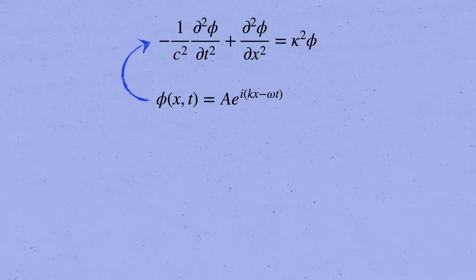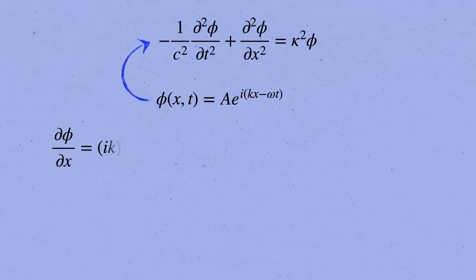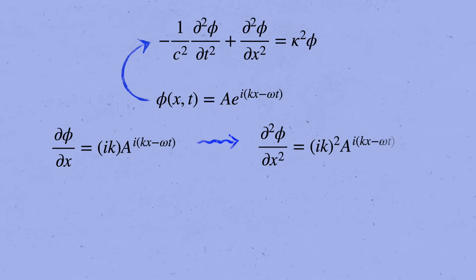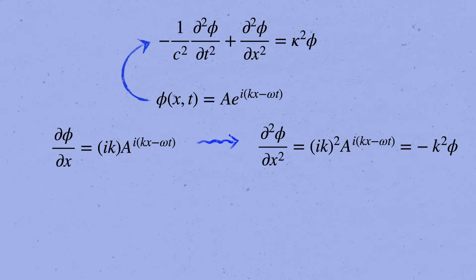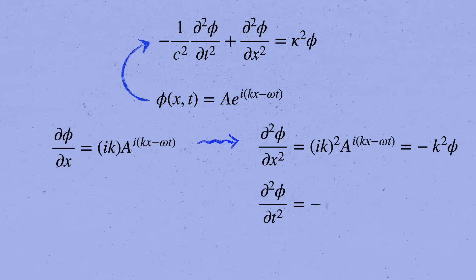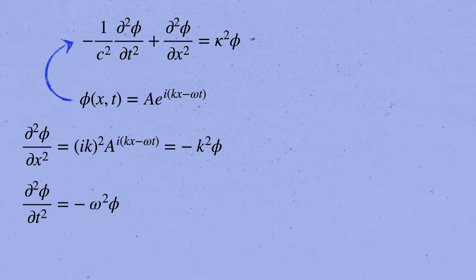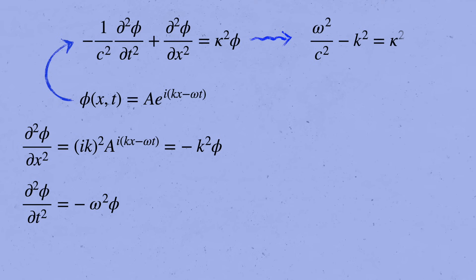Let's see what happens when we actually plug it into the Klein-Gordon equation. When we take the derivative with respect to x, it brings down a factor of ik from the exponent. And when we take the derivative a second time, it brings down another power, giving us ik squared, or minus k squared, times the thing that we started with. Similarly, the second derivative with respect to time gives us back minus omega squared times phi. So when we plug this guess into the Klein-Gordon equation and cross out the common factors of phi, we get omega squared over c squared, minus k squared, equals kappa squared. So the plane wave will indeed solve the Klein-Gordon equation as long as omega and k are related by this formula.